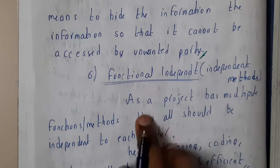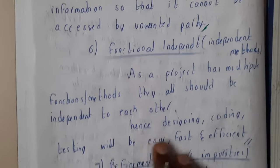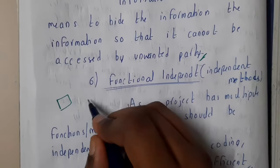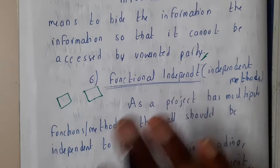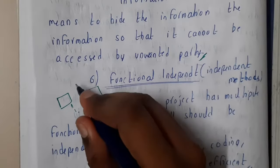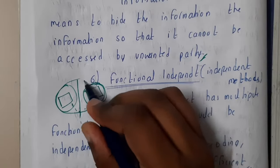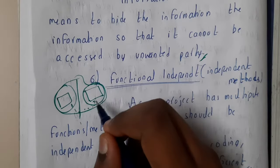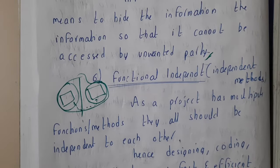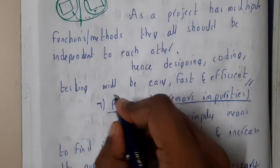Similarly, functional independence means that a project's multiple functions or methods should be independent of each other, so designing, coding, and testing can be easy. They should be loosely coupled — not completely independent, but with only a partial relation. The key idea is: if you run one module it should work, if you run another it should work, and if you run both together they should also work as a combined module.